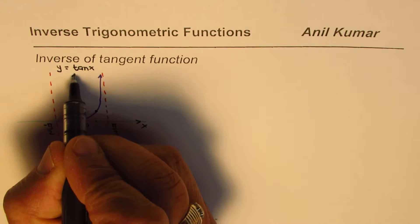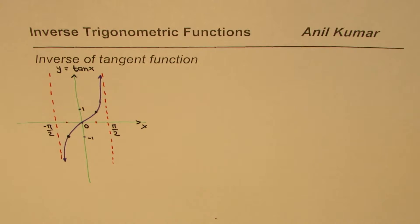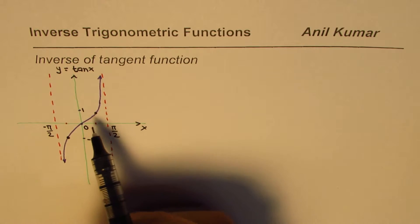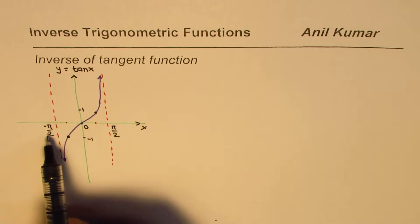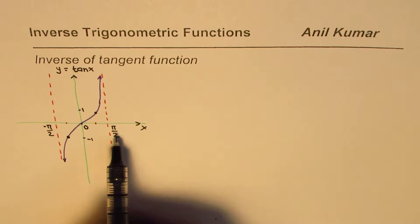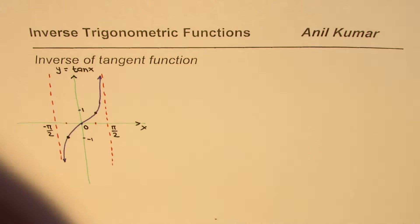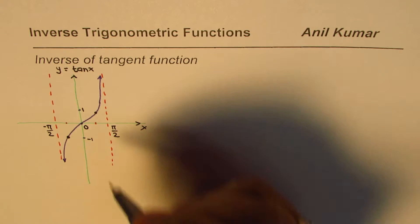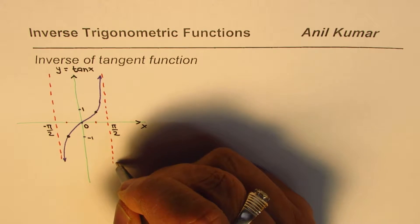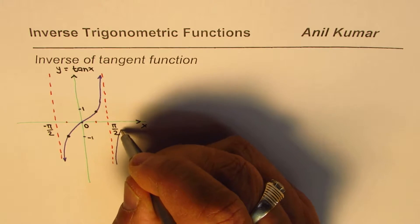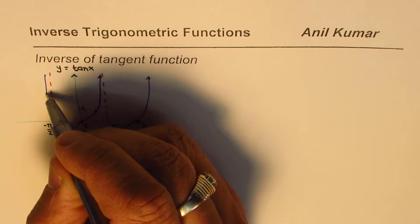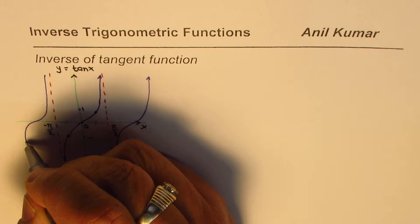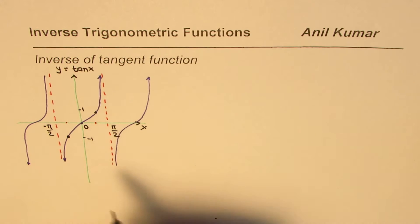The tan function has a period of π, which spans from −π/2 to +π/2, and it repeats. If you sketch further it will continue in the same pattern.